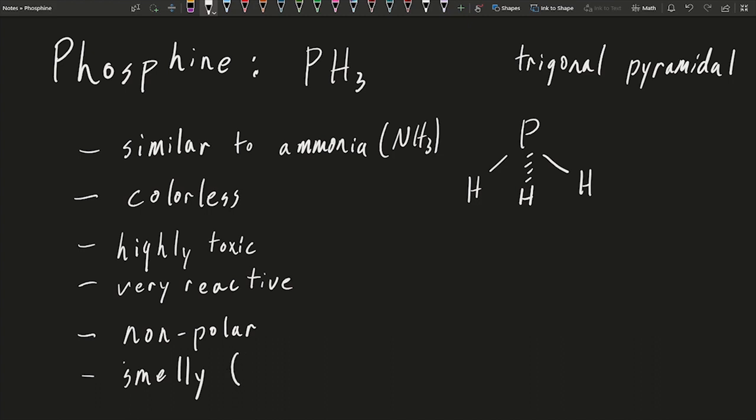One other telltale sign of PH3 is that it's smelly, kind of like garlic or rotten fish, but this is really thought to be due to an associated gas, P2H4, which is hard to separate out. So if you have a bottle of PH3, it usually is accompanied with some P2H4, and that's what gives it this smell. Likewise, when it's created in nature, a lot of times you might also see this P2H4.